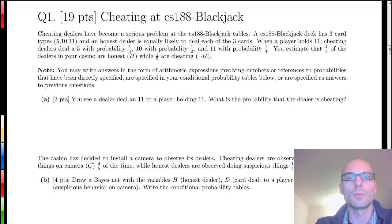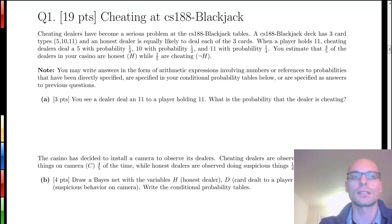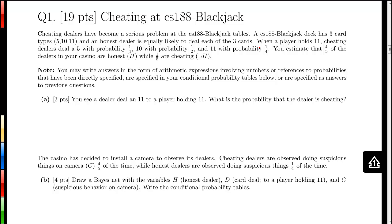Cheating dealers have become a serious problem at the CS188 blackjack tables. A CS188 blackjack deck has 3 card types: 5, 10, or 11. An honest dealer is equally likely to deal each of the 3 cards. When a player holds 11, cheating dealers deal a 5 with probability 1/4, a 10 with probability 1/2, and an 11 with probability 1/4. We estimate that 4/5 of the deals in the casino are honest, while 1/5 are cheating.